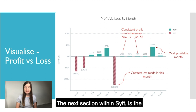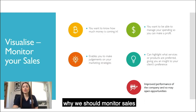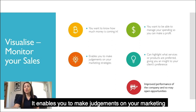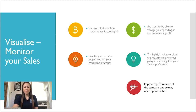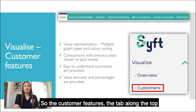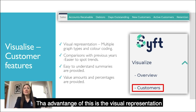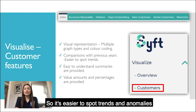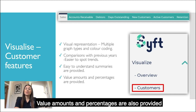The next section within SIFT is the customer function. Firstly, why should we monitor sales? You want to know how much money is coming in, and once you know this, you'll be able to manage your spending to ensure that you make a profit. It enables you to make judgements on your marketing strategies and can highlight what service or product is preferred, giving you an insight into your clients' preferences. Overall, this will improve your performance and can open up opportunities. The customer features tab along the top shows sales, accounts receivables, debtors, days outstanding, new customers, active customers and retention. The advantage is the visual representation — multiple graph types, colour coding, comparisons with previous years, making it easier to spot trends and anomalies, with summaries provided so value amounts and percentages are clearly shown.